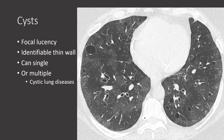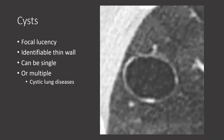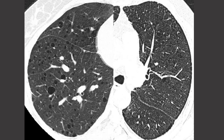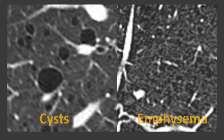A cyst, on the other hand, is a focal lucency within the lung parenchyma with an identifiable wall. This CT demonstrates multiple cysts within the lung parenchyma with clearly identifiable walls — in contrast to emphysema where walls are not identifiable. Comparing side by side: the right lung demonstrates multiple cysts with clearly identifiable walls, while the left lung demonstrates emphysema where holes exist but many lack any identifiable walls.